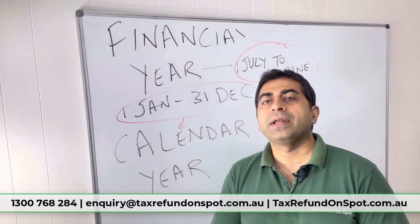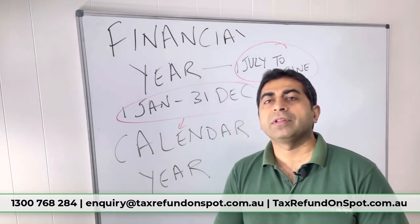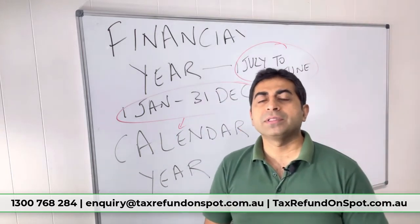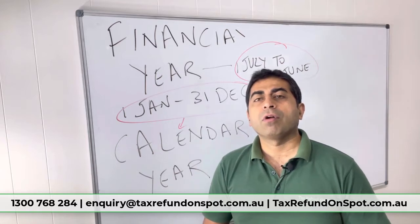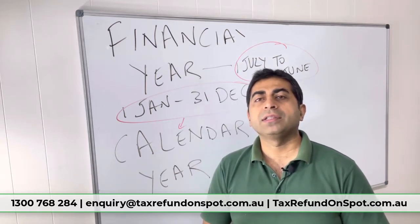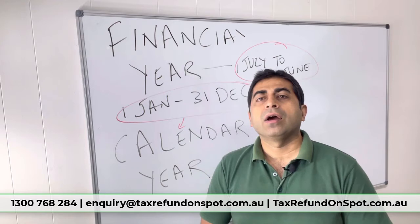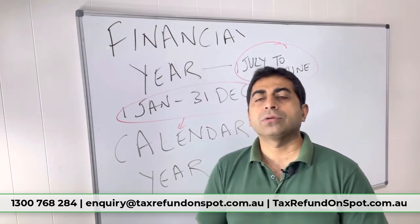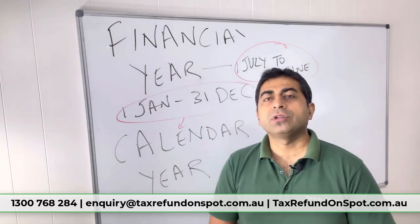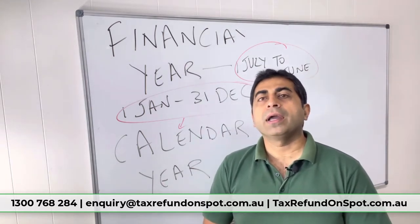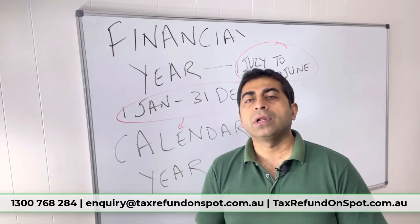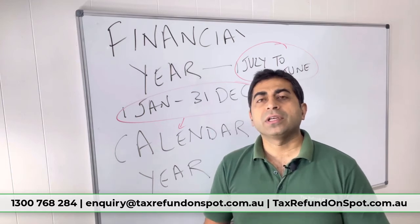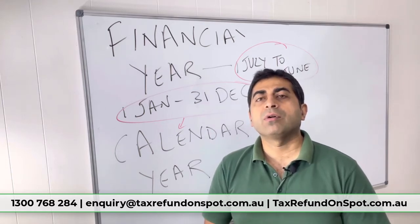A financial year means that you have to lodge your tax return for the period 1st of July to 30th of June. Whatever income you have — from business, from a job, from interest income, from dividends, from royalties, from rent, and even from international sources — all that income earned during the period 1st of July to 30th of June must be disclosed in that financial year.